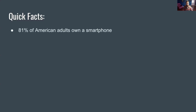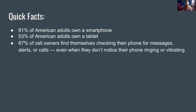Here are some quick facts about our mobile devices. First, 81% of American adults own a smartphone — in a typical class I'd say probably 99% of students own one. 53% of American adults own a tablet. 67% of cell owners find themselves checking their phone for messages, alerts, or calls even when they don't notice their phone ringing or vibrating. I know I'm guilty of that — sometimes I'll check my phone and there was really nothing there. It's these phantom vibrations that make me feel like maybe I'm a little too addicted to my phone.